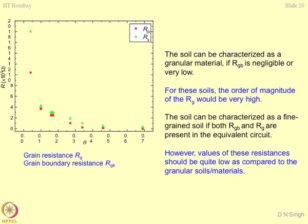For coarse-grained soils, RG value will be very very high — if you train a circuit and find that RG is extremely high, the material is coarse-grained. Fine-grained materials show very low resistance because of surface charge. So the soil can be characterized as fine-grained if both RGB and RG are present in the equivalent circuit, but their values are less — and both should be quite low compared to granular soils. Just by looking at the values of the components in the circuit, you can identify whether the material is fine-grained or coarse-grained.